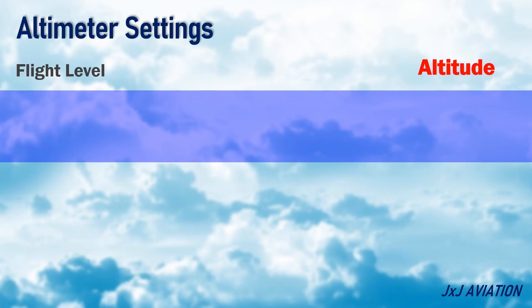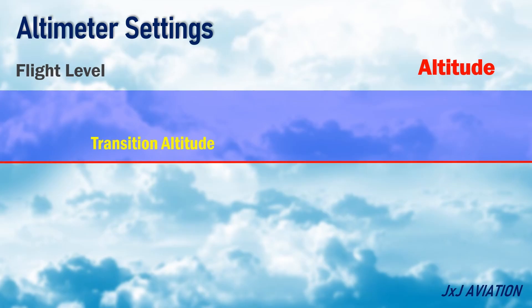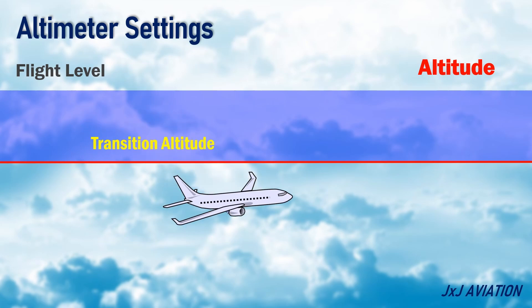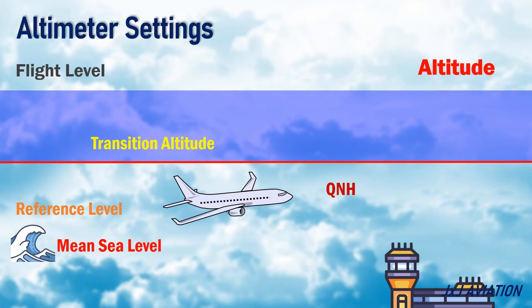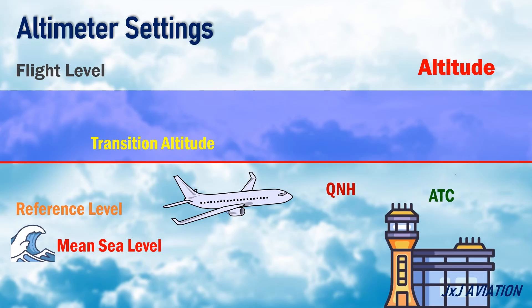Altitude: This setting is used when the aircraft is below the transition altitude. In this setting, the altimeter gives an aircraft's elevation above a certain reference level, which is usually the mean sea level. This is referred to as QNH. The QNH setting would be provided by ATC, or Automatic Terminal Information Services, ATIS, as per the conditions near the airfield.